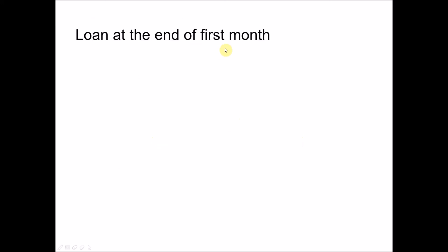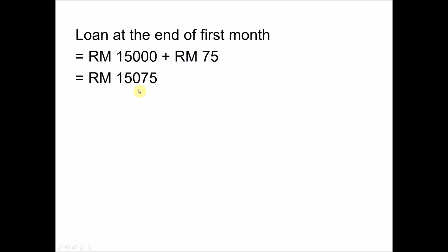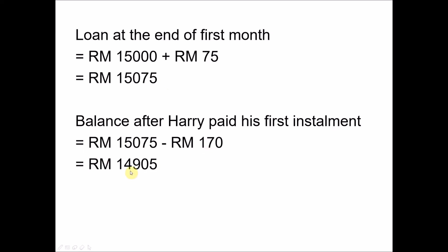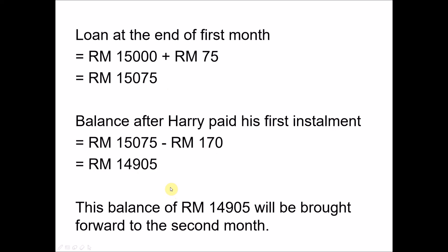So at the end of the first month, Harry owes fifteen thousand plus seventy-five ringgit, which is fifteen thousand and seventy-five ringgit. After paying the monthly installment of one hundred and seventy ringgit, the balance at the end of the first month is fourteen thousand nine hundred and five ringgit. This balance is carried forward to the second month.